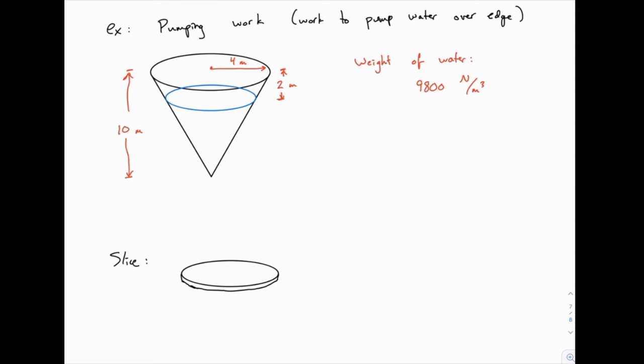I've got a note here to the side, just a reminder that we're using metric units, so the weight of water is 9800 newtons per cubic meter. Again, that value will be given to you anytime you need it.